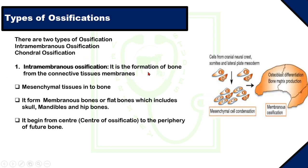Intramembranous ossification is the formation of bone from connective tissue membranes. In this type of ossification, mesenchymal tissues of the embryo transform into bones. It forms membranous bones or flat bones, which include bones of the skull, mandibles, and pelvis. Every bone has a center from which bone formation starts — we call it the center of ossification. Membranous bones begin from the center toward the periphery of the future bone. Cells from cranial neural crest, somites, and the mesodermal layer differentiate into mesenchymal cells, which condense to form flat bone.